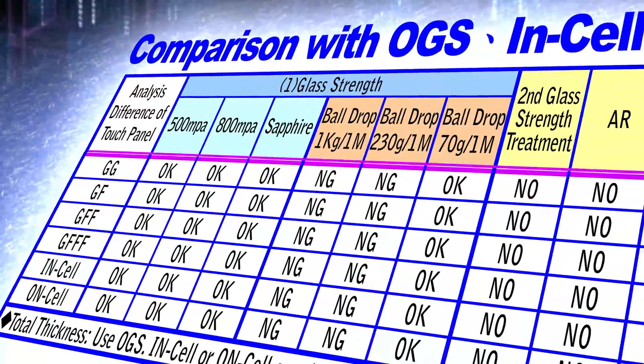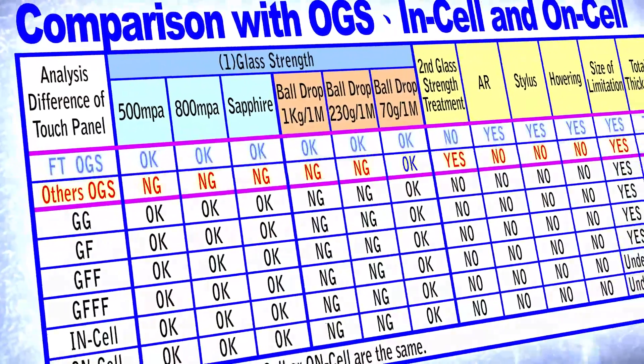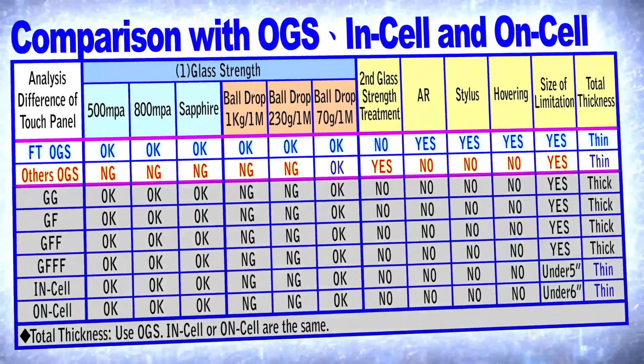Nowadays, the projected capacitive control technology divided into four categories. Among the four different categories, OGS works better than the others.